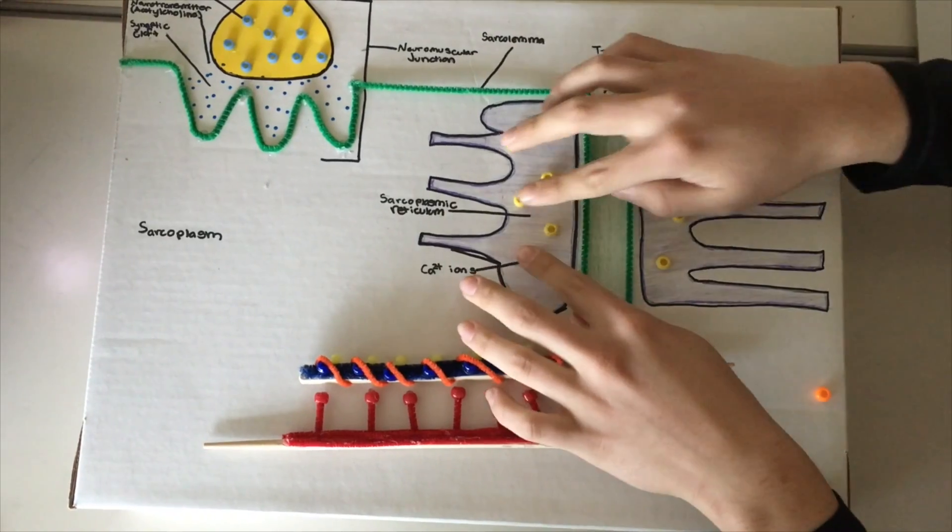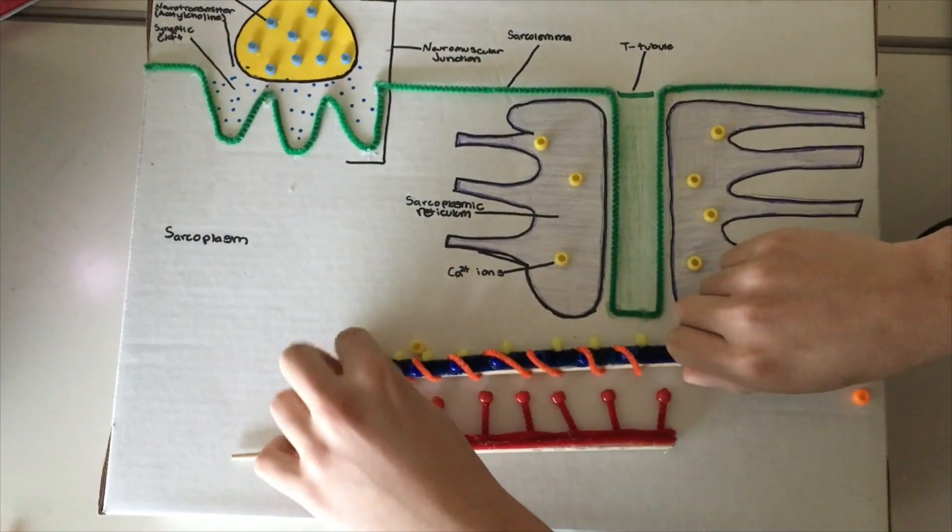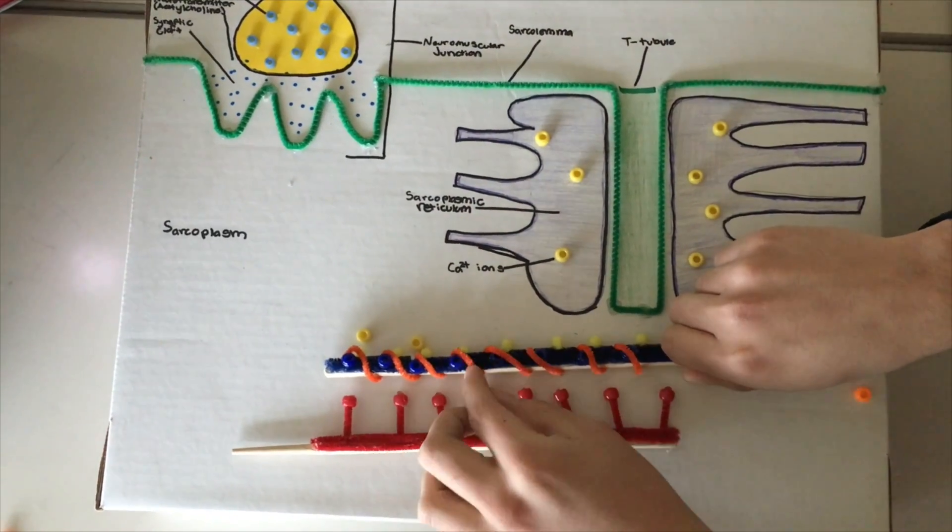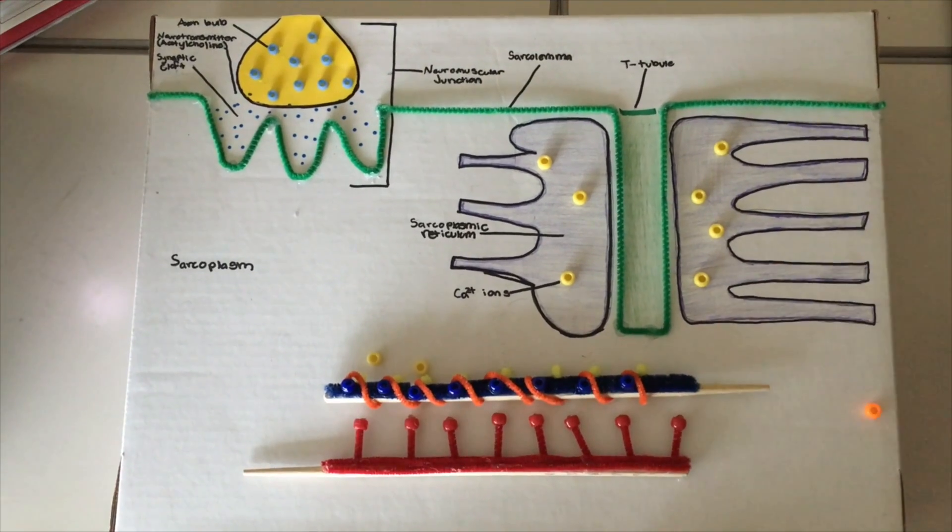Calcium ions are then released from the sarcoplasmic reticulum, binding to the troponin on the thin filament, causing the tropomyosin to adjust in its shape and expose the binding site on the actin.